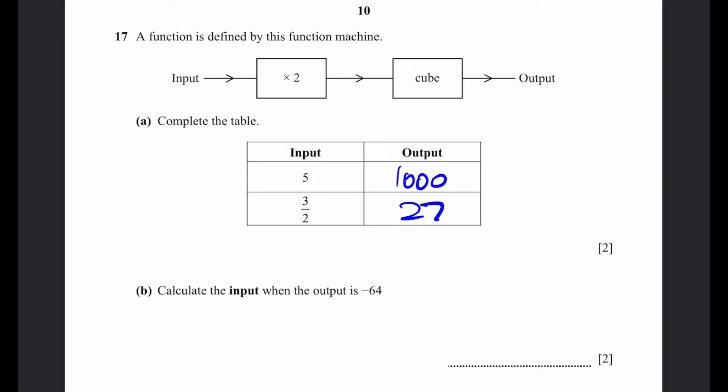B, calculate the input when the output is 64. Let's call the input x. So 2x, the whole cube, is equal to minus 64. 2x is equal to minus 4. So x is equal to minus 2. That's our answer. Input is minus 2.